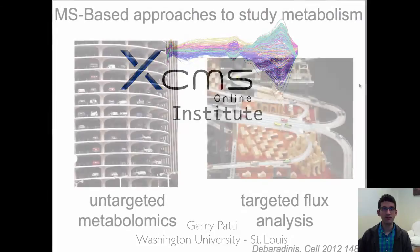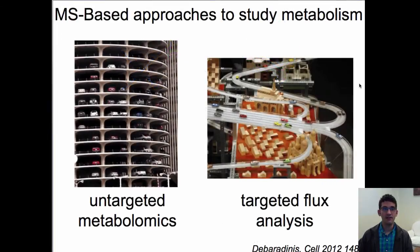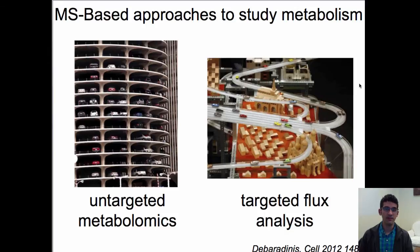Starting on the first slide, there are traditionally two ways to use mass spectrometry to study metabolism. There is untargeted metabolomics, as depicted on the left, and there is targeted metabolic flux analysis, as depicted on the right.